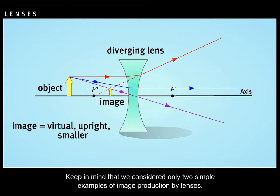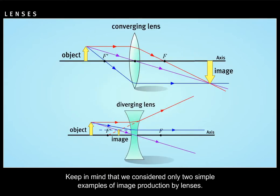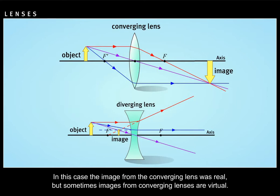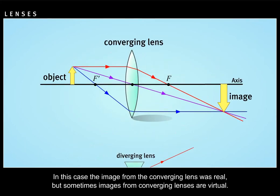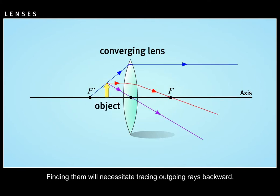Keep in mind that we considered only two simple examples of image production by lenses. In this case, the image from the converging lens was real, but sometimes images from converging lenses are virtual. Finding them will necessitate tracing outgoing rays backward.